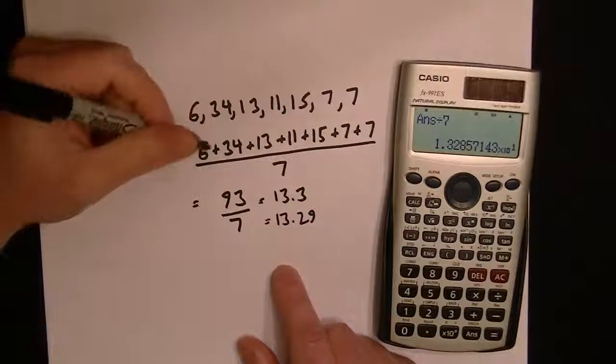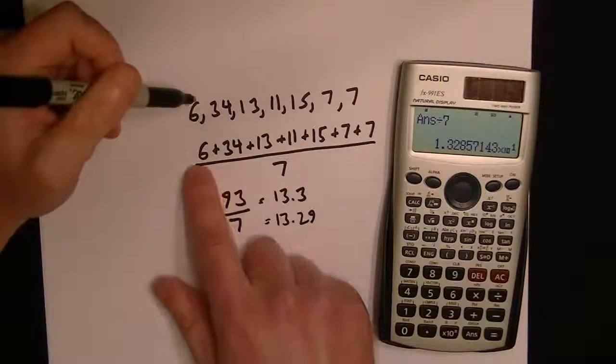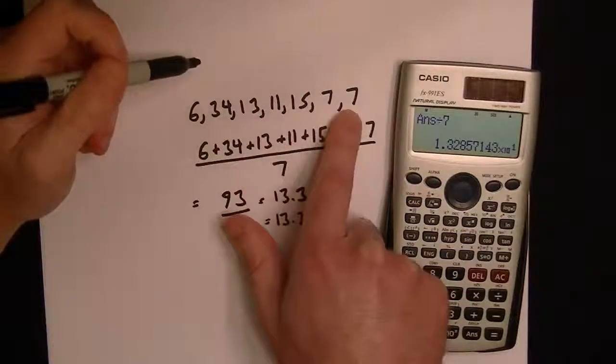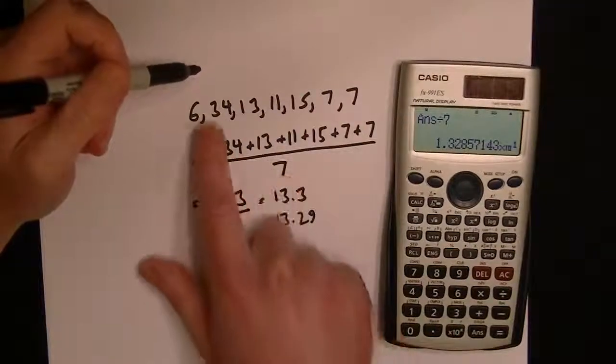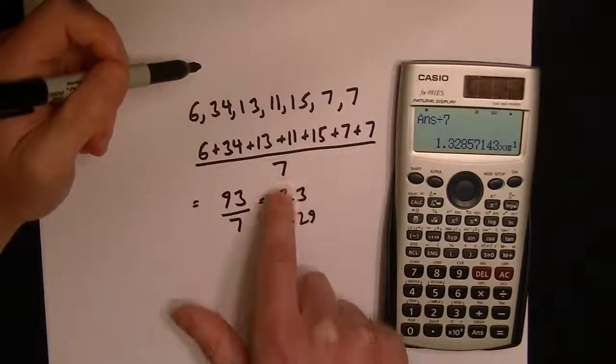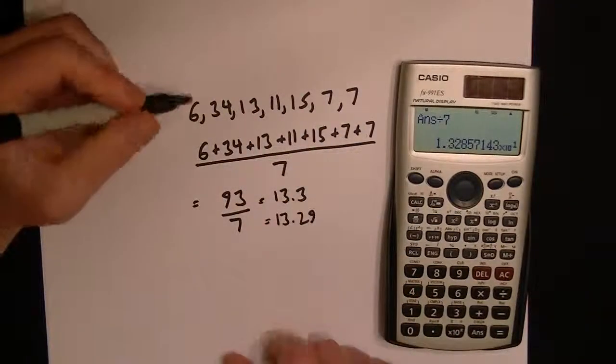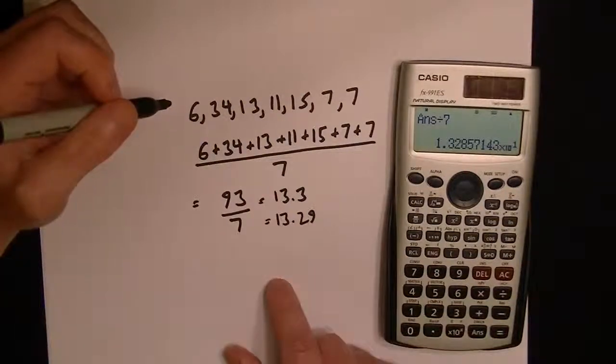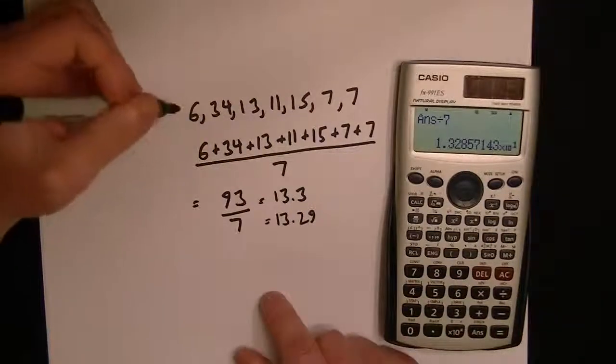The key to finding the mean: you add up all the numbers you have, count how many numbers you have, and divide by that number. That's how you get the mean. The mean is also the average.